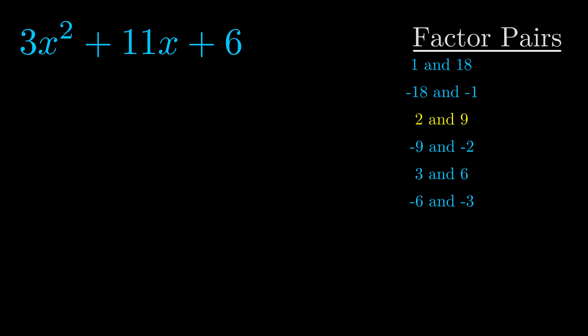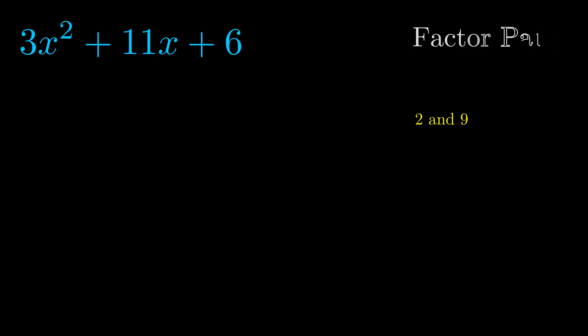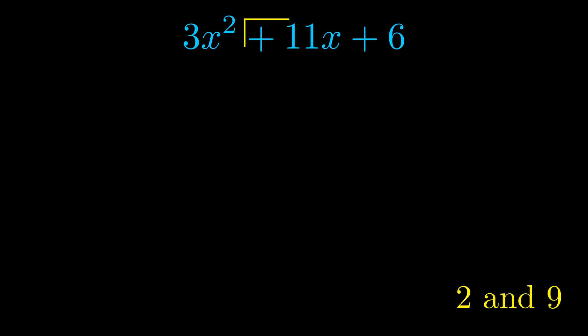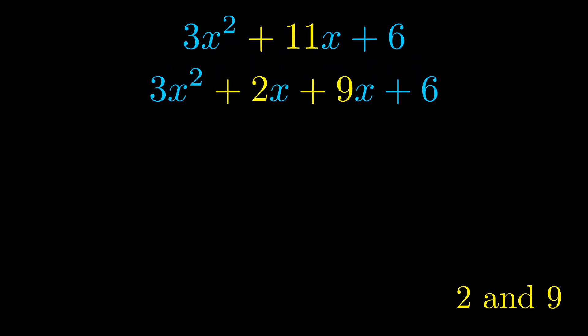And really this is the only factor pair that we need. Now once we have this factor pair, what we want to do is use it to split up the b value. Notice how I'm going to keep my first term and my last term completely unchanged. It is only this b term highlighted in yellow that gets expanded into this correct factor pair.